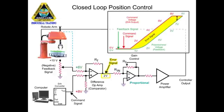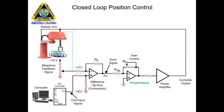The robotic arm moves to the desired position until the error signal at the difference op-amp is zero. When the arm reaches the desired position, the difference op-amp voltage is reduced to zero and the feedback voltage from the potentiometer equals the command voltage of the computer. To increase the response time of the robotic arm to the command signal, the gain of the proportional amplifier can be increased.